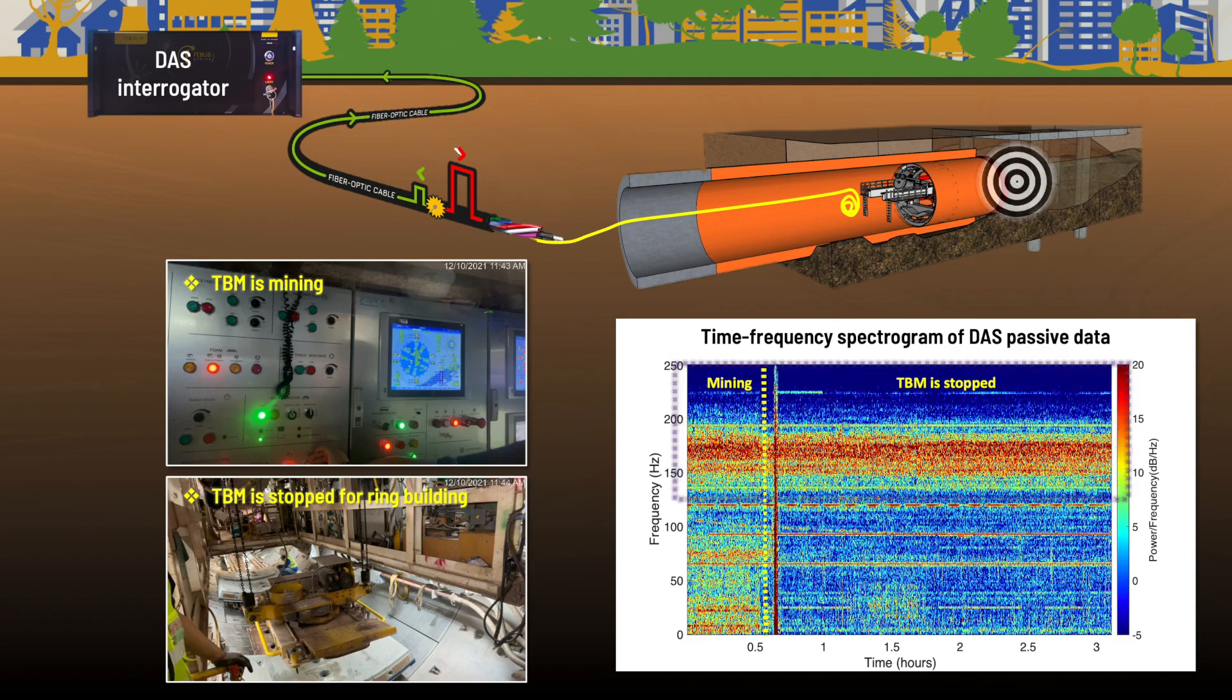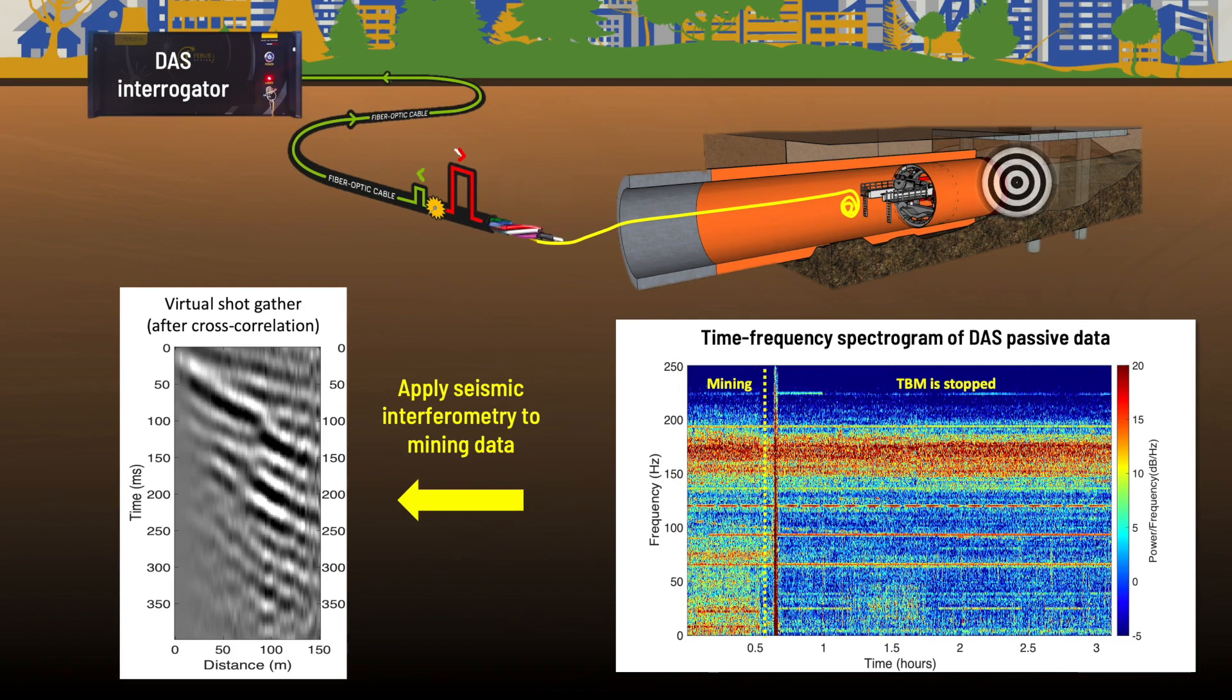The energy excited by the TBM cutter during the mining stage propagates forward and backward as seismic waves along the tunnel. We propose to take advantage of the DAS system to monitor the seismic waves to investigate the underground geological conditions. We apply seismic interferometry to the mining data to obtain the virtual shot gather. Let's see what information we can get from the gather.